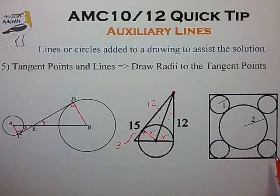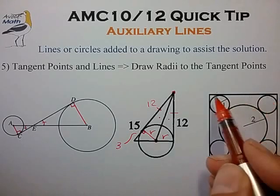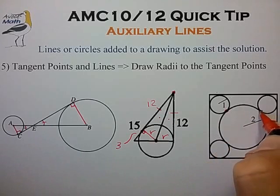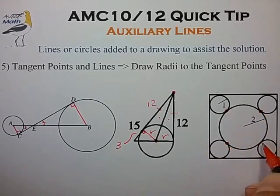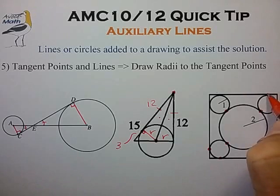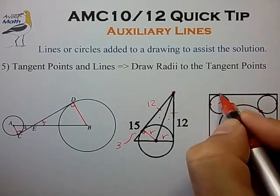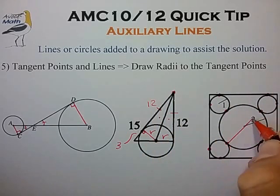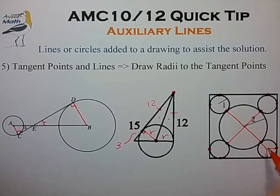In our third example we have five circles stuffed inside of a square. Again we're going to try to draw radii to the tangent points. Between the circles we have four tangent points, and against the walls of the box we have another eight tangent points. Drawing in the radii, for the large circle it looks like we have a big X, and for the small circles we can draw those in as well.